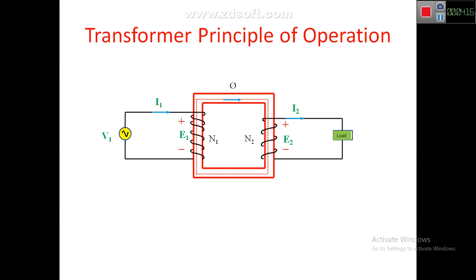EMF will be induced in the second coil and the current will flow through the load. So in this way, the electrical energy from one circuit is transferred to another circuit through the medium of magnetism, through magnetic medium. This is the main concept of transformer action. Obviously, there is a voltage across the load, and that voltage will be V2.